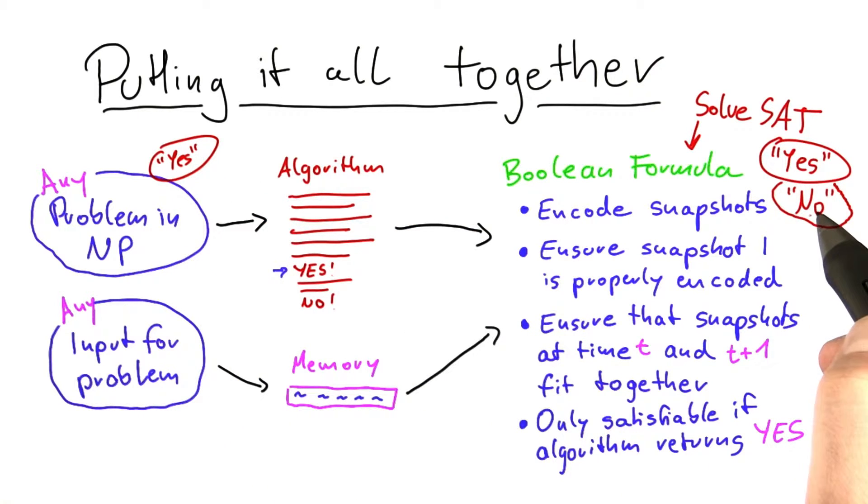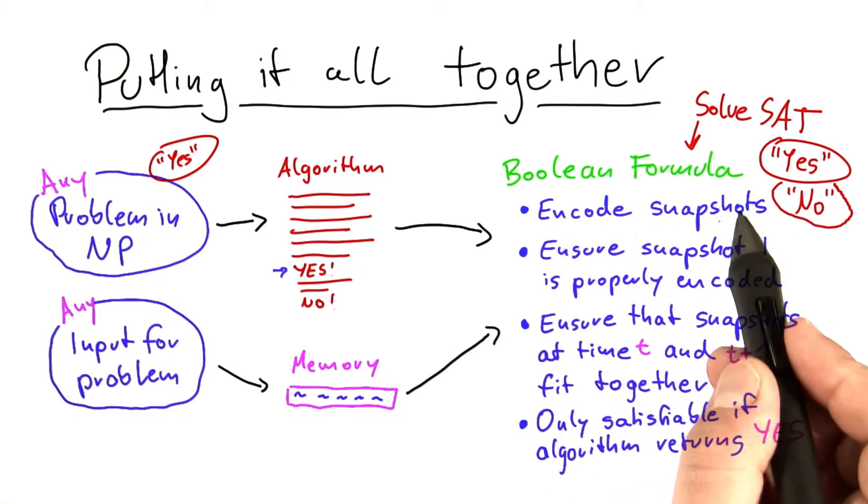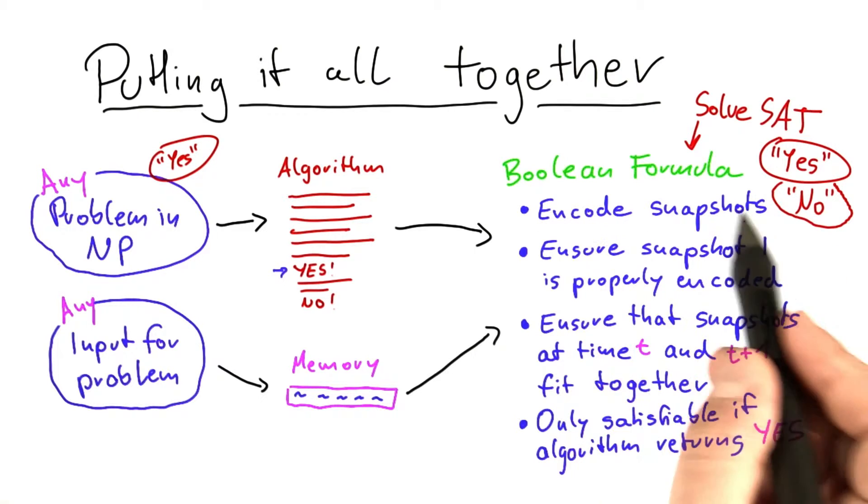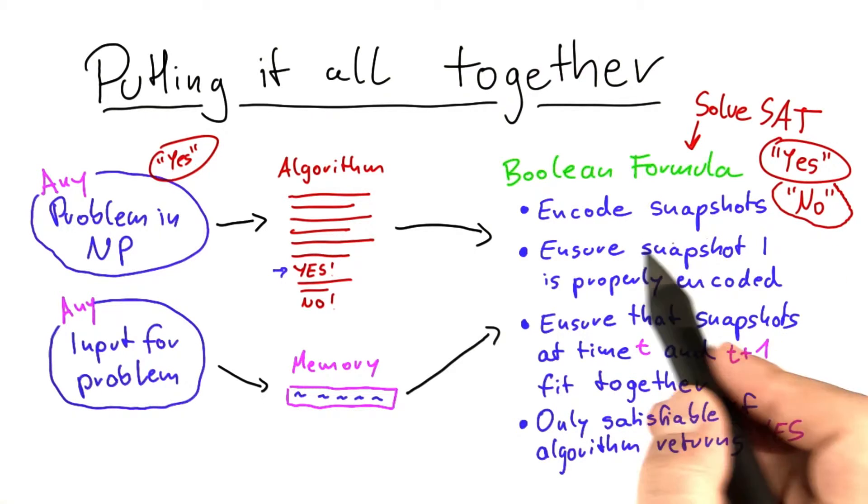If it says no on the other hand, what does that mean? Well, we know that we always can encode the snapshots. So it's not going to say no because it cannot encode a snapshot because that's possible always.